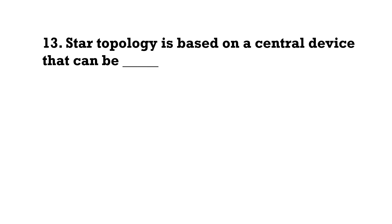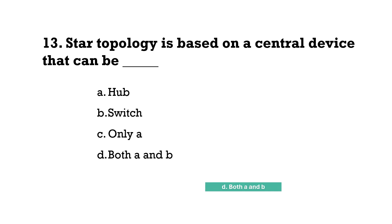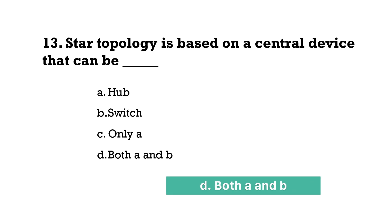Star topology is based on a central device that can be what? The central device can be a hub or a switch. So the correct answer is option D, both hub and switch.